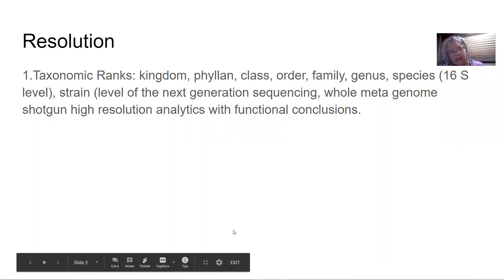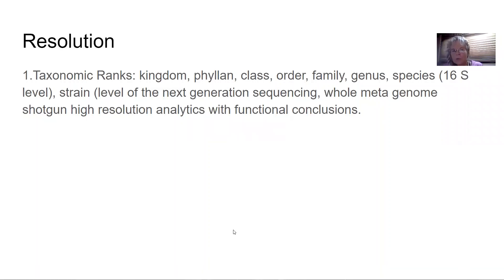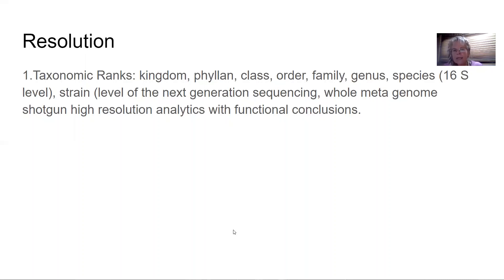The first technical thing we have to discuss is resolution. When we're looking at taxonomic ranks in the microbiome, if you think back to your classes discussing taxonomy, you go from kingdom, phylum, class, order, family, genus, species, and then strain. The current stool tests stop at species — the 16S DNA PCR amplification only gives you species information; it does not give you strain information. The next generation of sequencing is called whole metagenomic shotgun high-resolution analytics with functional conclusions, and that's what we're going to be discussing.